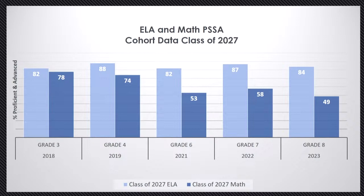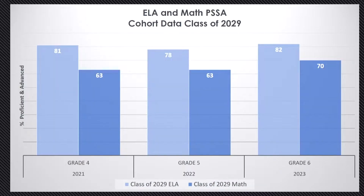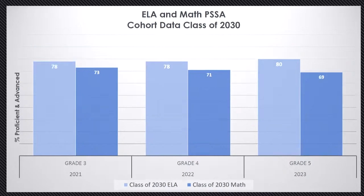Looking at their third grade data through their eighth grade data, ELA remains relatively stable. For our current class of 2029, our current seventh graders, it's a very similar story — they continue to strengthen both in ELA and in math. This is our current sixth grade — very similar story. There's a little bit of a dip in the math, but overall it's a relatively stable group.